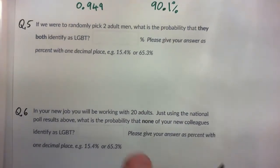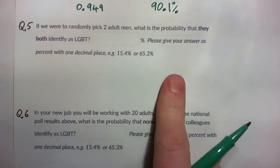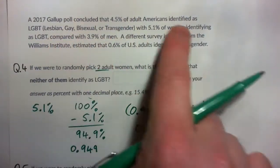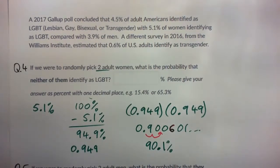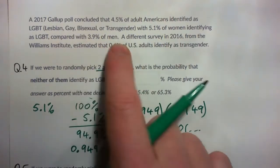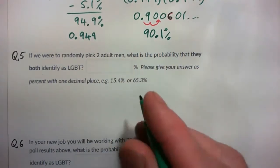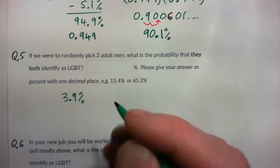Question 5: if we were to randomly pick two adult men, what is the probability that they both identify as LGBT? Press pause and try this. The first thing is to figure out what percentage to use. We're randomly picking two adult men, so we use 3.9% of men.